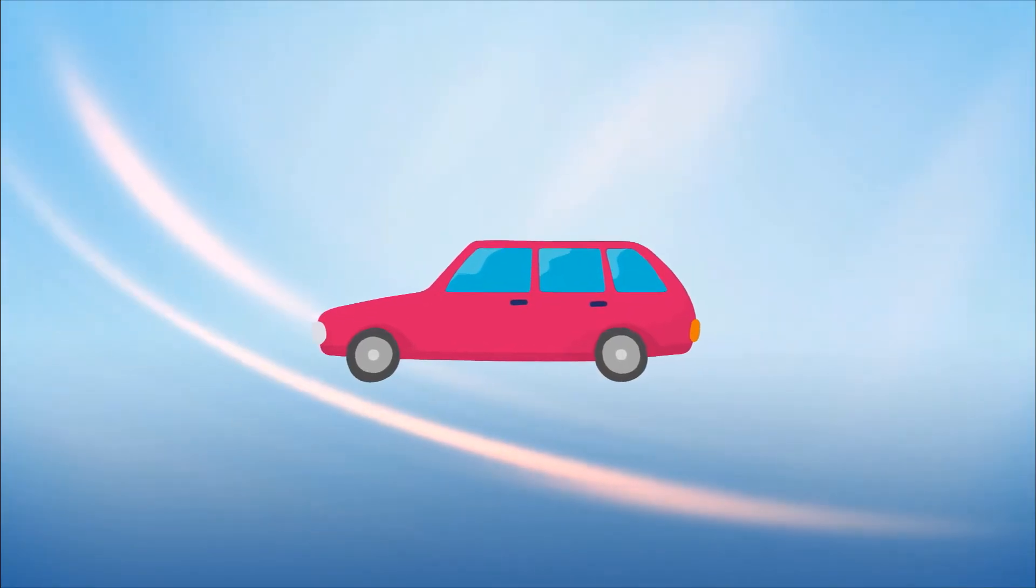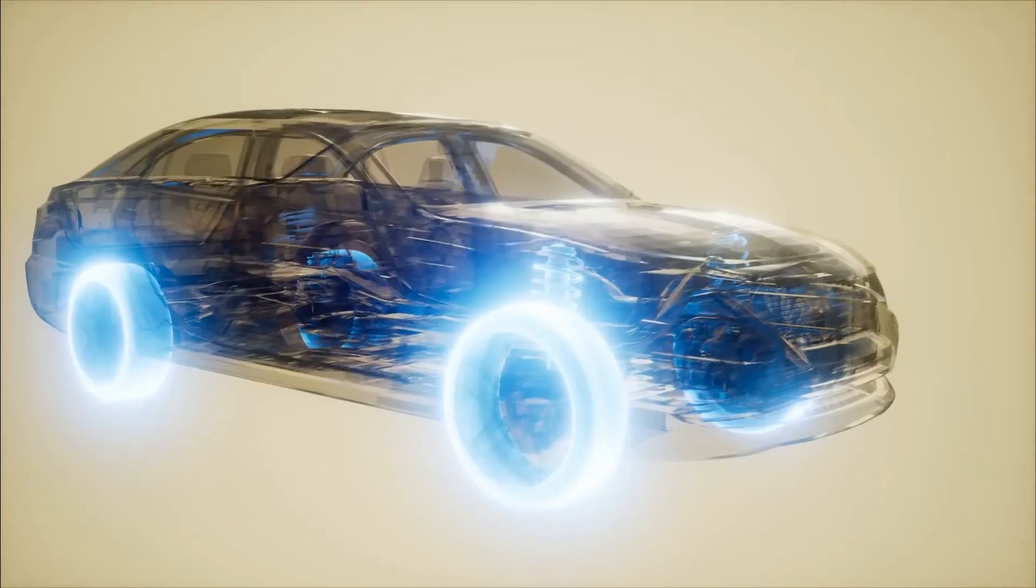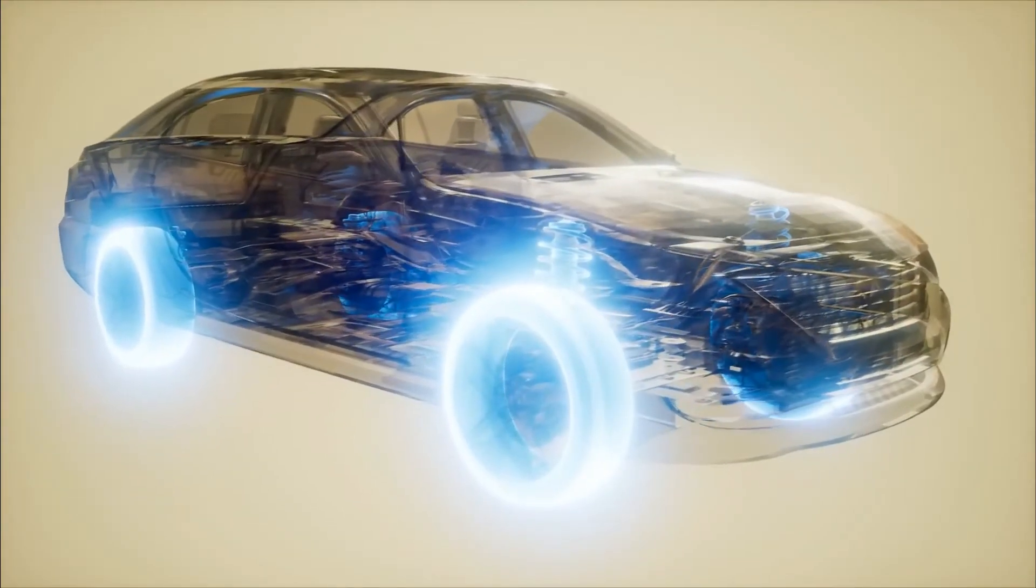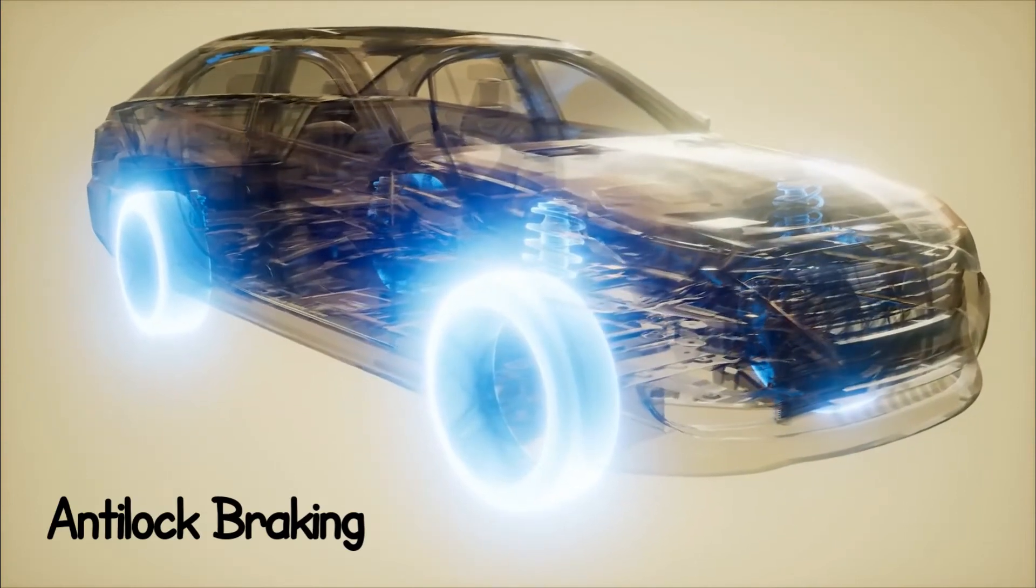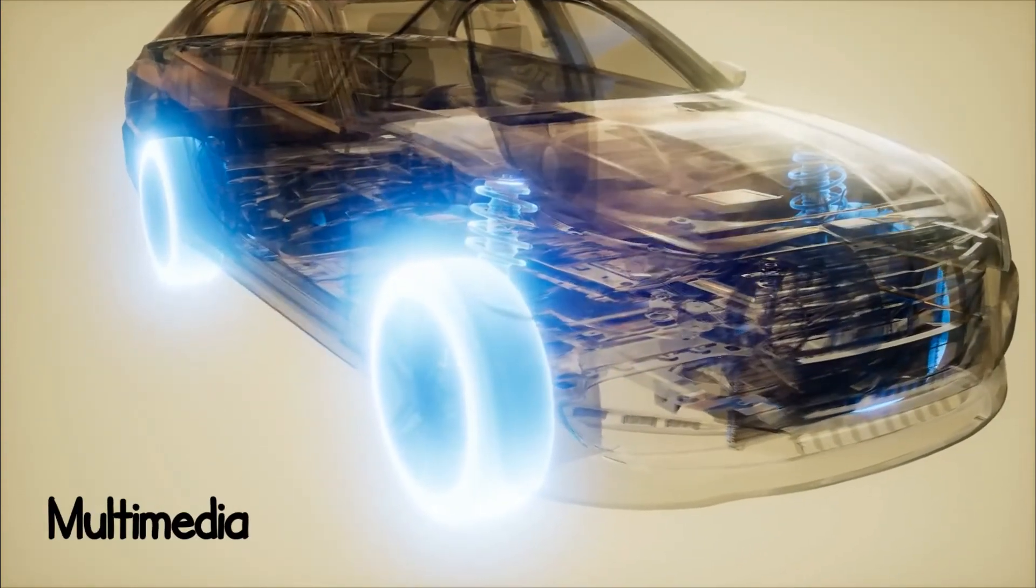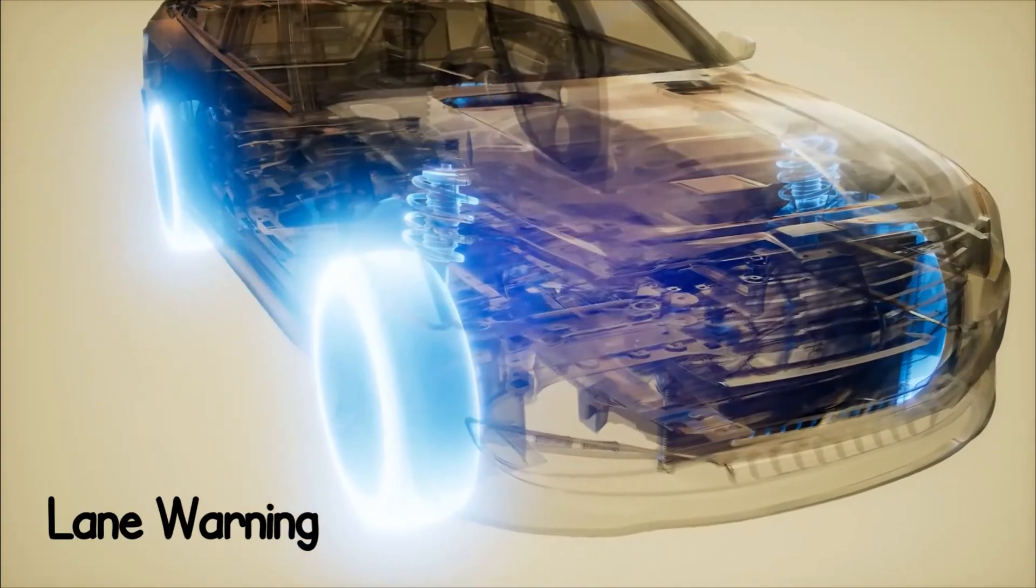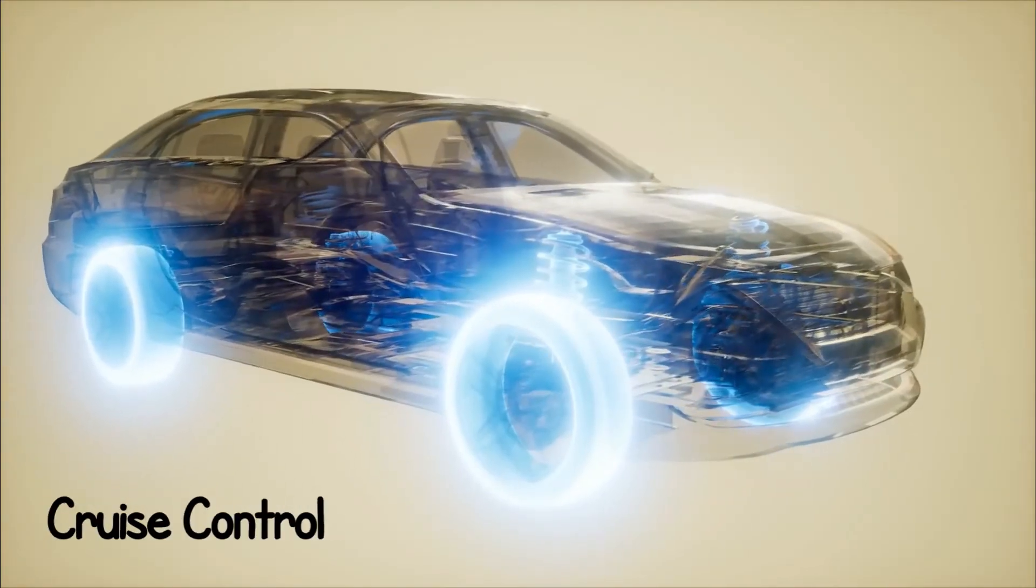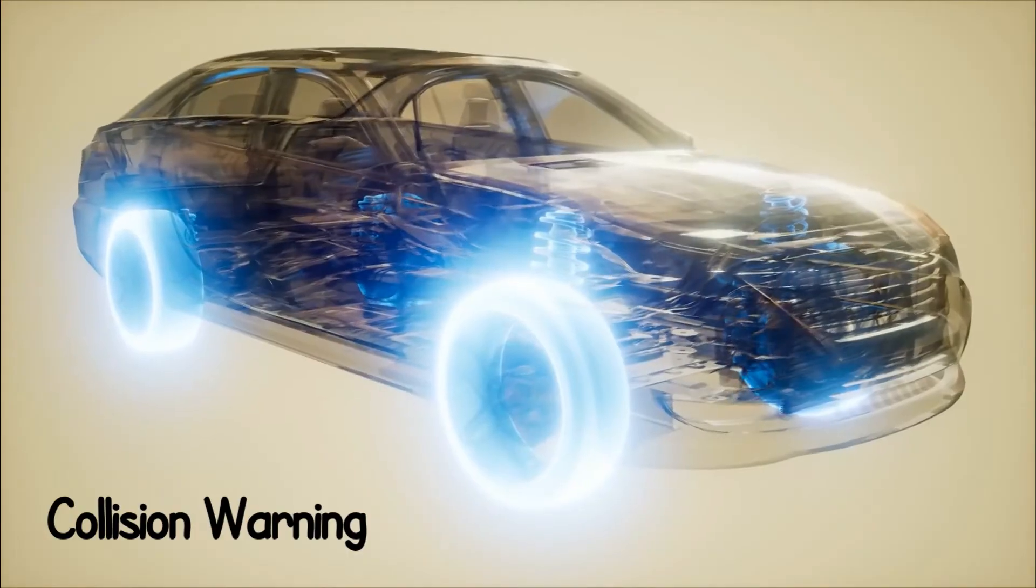Take the example of a car today. It comprises so many embedded systems like anti-lock braking system, airbag system, multimedia, digital radio, lane warning, display system, cruise control, collision warning, and many more.